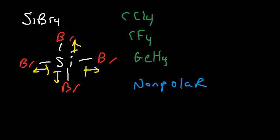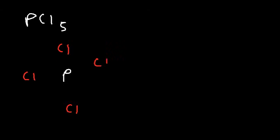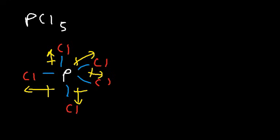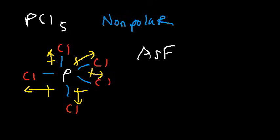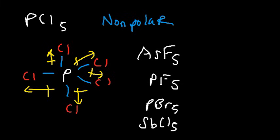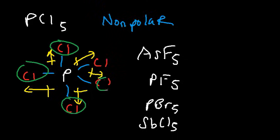Let's look at a different geometry — PCl5. It has no lone pairs on the central phosphorus atom, and all dipole moments point toward the more electronegative chlorine atoms in opposite directions, so this molecule is nonpolar. Similar molecules like AsF5, PF5, PBr5, and SbCl5 all have the same trigonal bipyramidal geometry with identical outer elements and are therefore nonpolar.